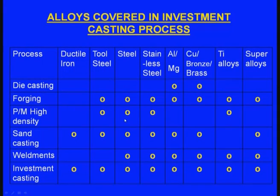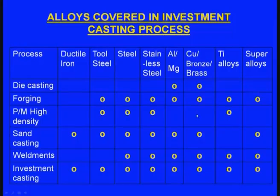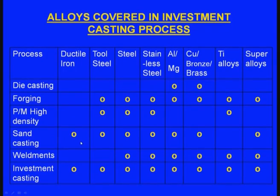If we consider the powder metallurgy process, ductile iron, copper, bronze, brass and super alloys cannot be manufactured using powder metallurgy process. Similarly, in sand casting, ductile iron, tool steels, steels, stainless steel, aluminum, magnesium alloys, copper, bronze, brass and super alloys can be manufactured, but titanium alloys cannot be manufactured using sand casting process.